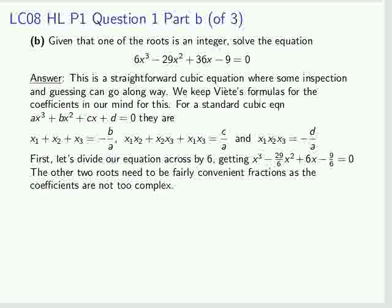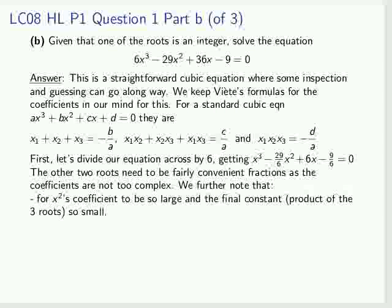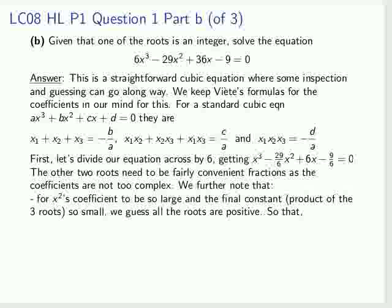We're expecting fractions for the other two roots. Further note that the x² coefficient is quite large, and the final constant, the product of the three roots, is rather small. So we're going to guess that all the roots are positive. The integer root must then be either 1, 2, 3, or 4, because 29 over 6 is 4 and 5 sixths. So that's why it can only be 1, 2, 3, or 4.